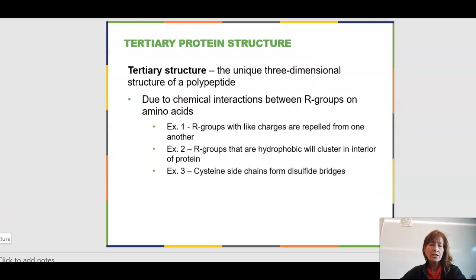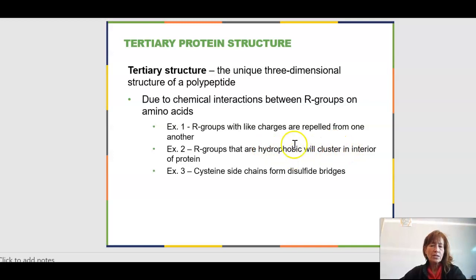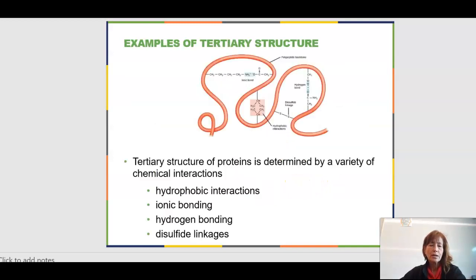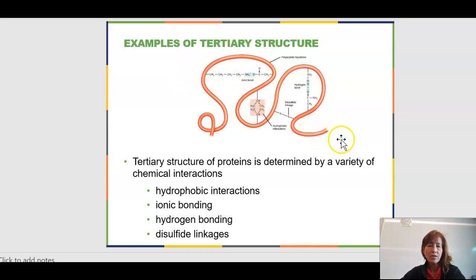At the tertiary level, we have really established the shape of the protein, and that's largely due to what's happening between the R groups on that initial chain. Some R groups will be attracted, some will be repulsed — R groups with like charges would move away from one another. Some will be hydrophobic and want to go inside as it folds. Some amino acids form specific structures like the disulfide bridge. The ribbon or red shape here is the primary structure, which has also undergone secondary pleating or helix formation, and now we're getting this tertiary folding.